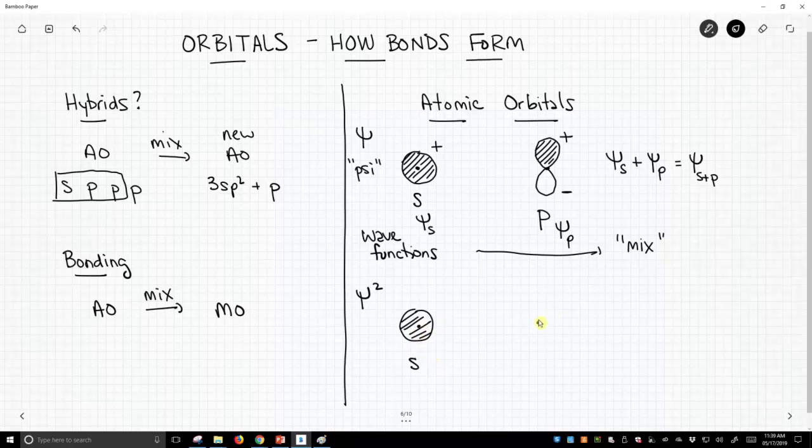What is the psi squared for the p orbital? Well, when you multiply a negative value with itself, you get everything positive. So for our simple pictures, psi squared is really just the positive representation of our atomic orbitals.